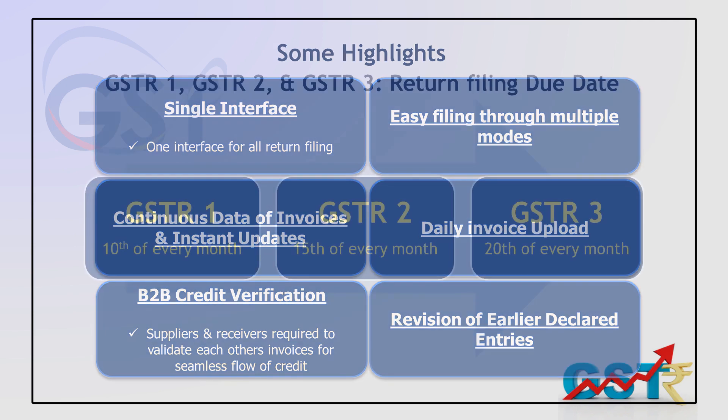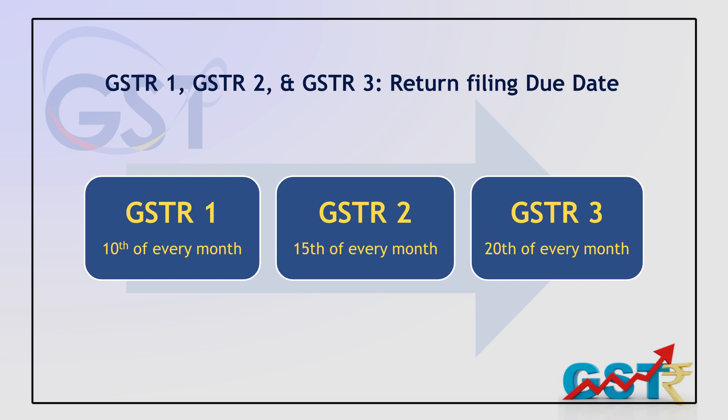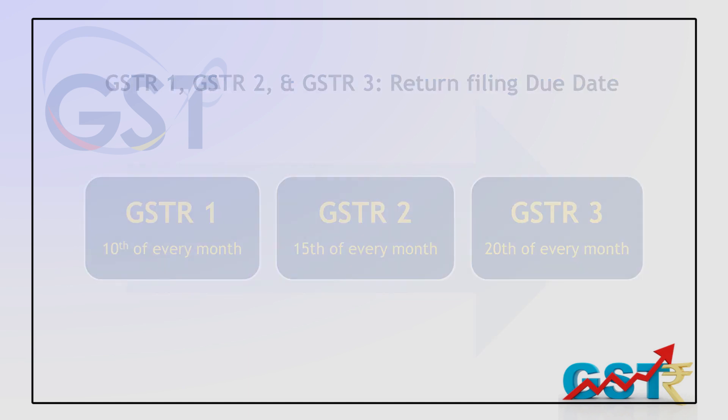What does the law say? The goods and services tax law says that we should have a multiple tier and layer of returns to be filed on a regular basis, on a month-to-month basis. For example, the total amount of sales, total amount of turnover, and output tax liabilities should be represented through a return. That return is called GSTR1. GSTR means return, 1 means number one — GSTR1.